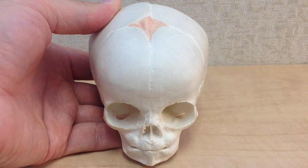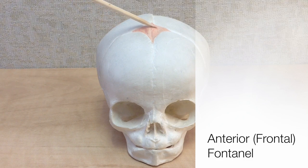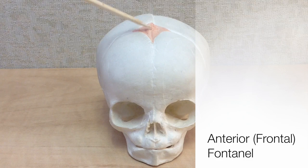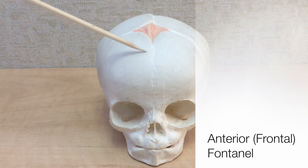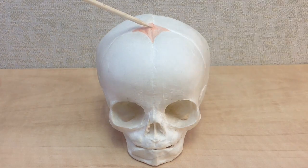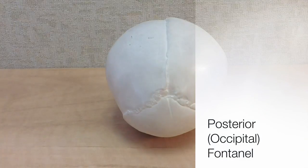There are four major fontanelles found in the infant's skull at birth. This is the anterior or frontal fontanelle — it's colored in on this model of the infant's skull. This single fontanelle is the largest one in the infant's skull and is shaped like a diamond. It is located where the frontal bone meets the parietal bones of the skull, and it usually ossifies or closes by age two.